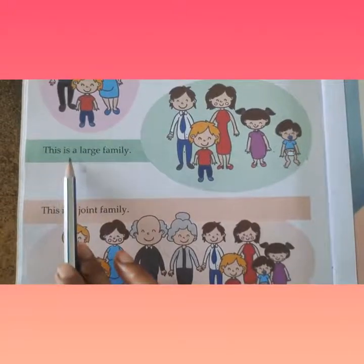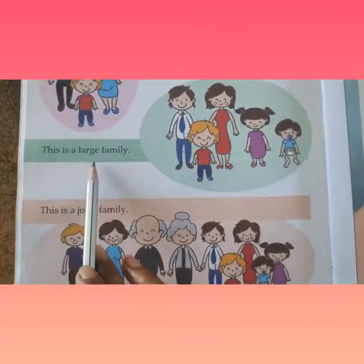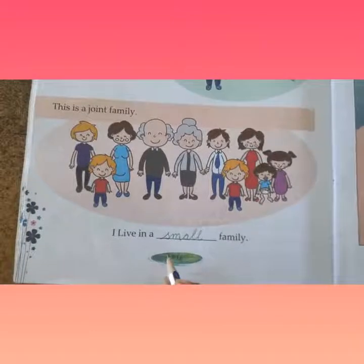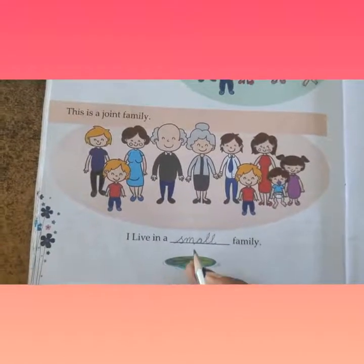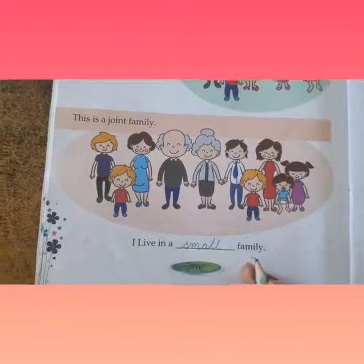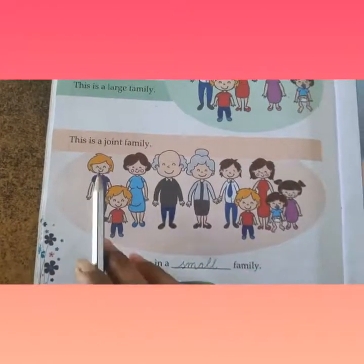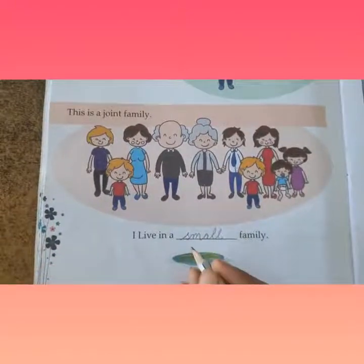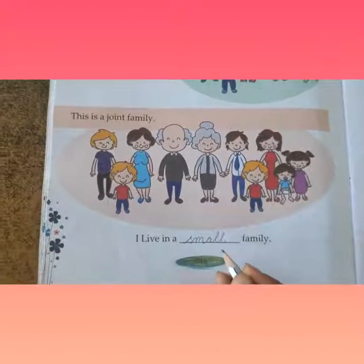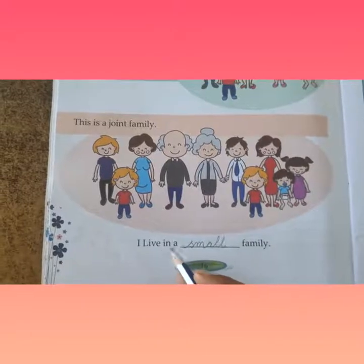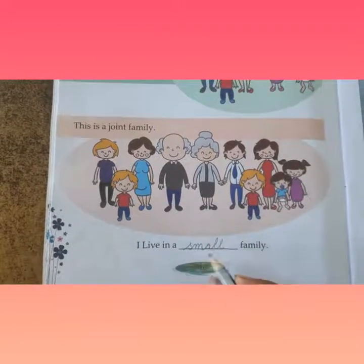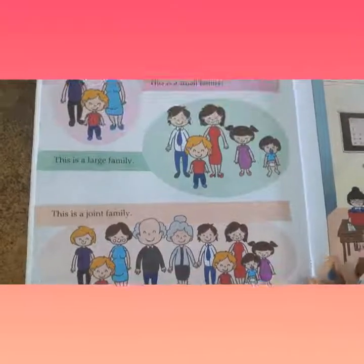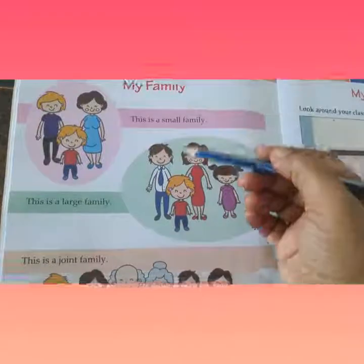If you live in a large family, you will write L-A-R-G-E — large family. And if you are living in a joint family, you will write joint. I live in a joint family. Like this, children, you can read this chapter.